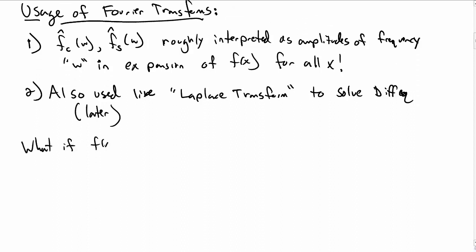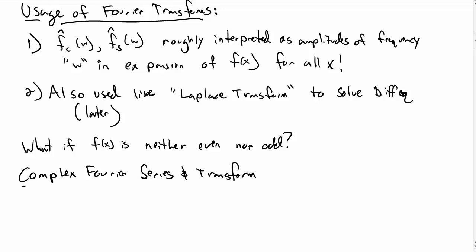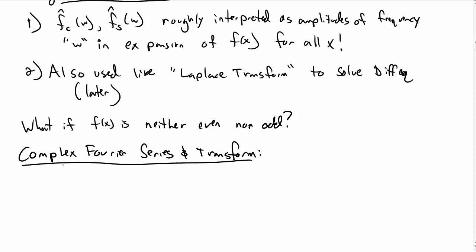Okay, but what if you have a general function f of x, which is neither even nor odd? What do you do? Well, you know that you can always write a series for a function that's neither even nor odd, and so let's talk about how you do that and then how you change that into the general Fourier transform.